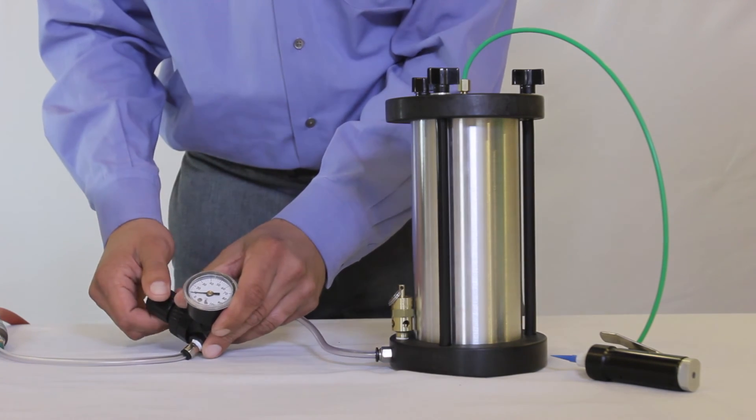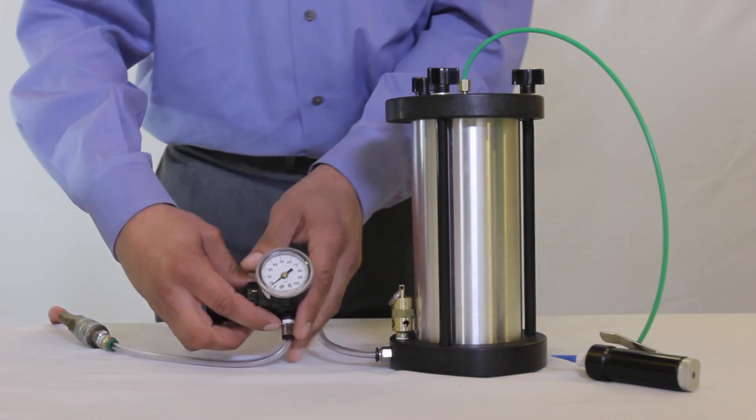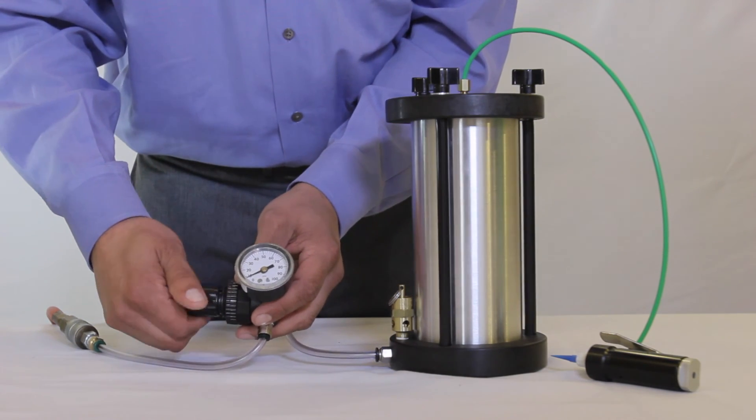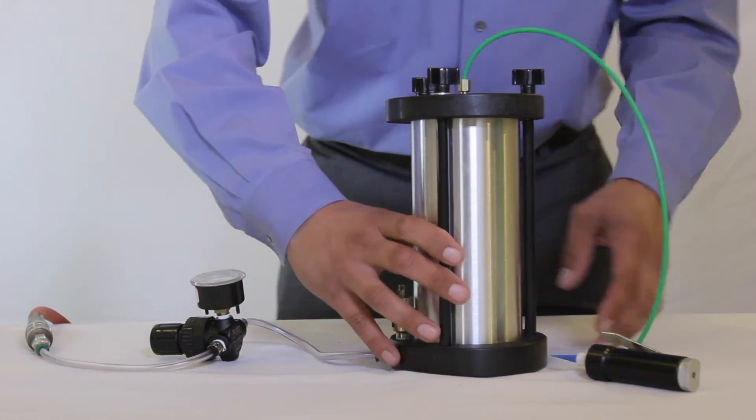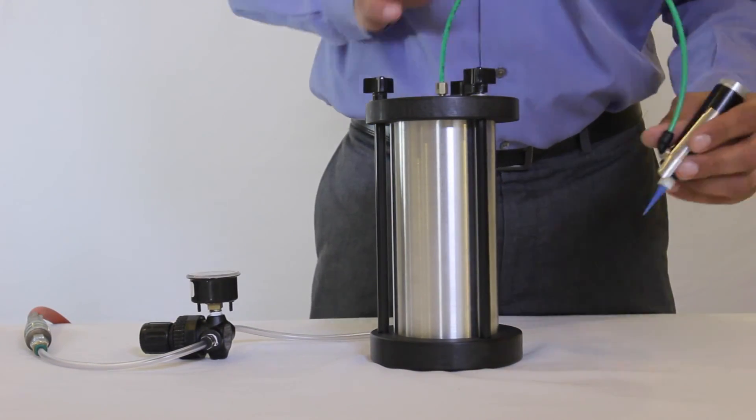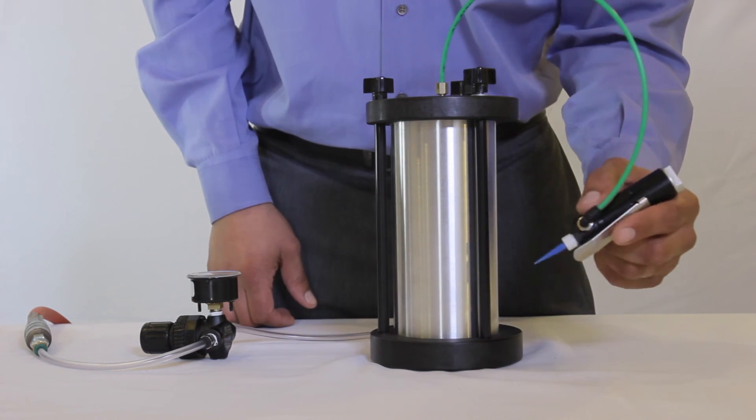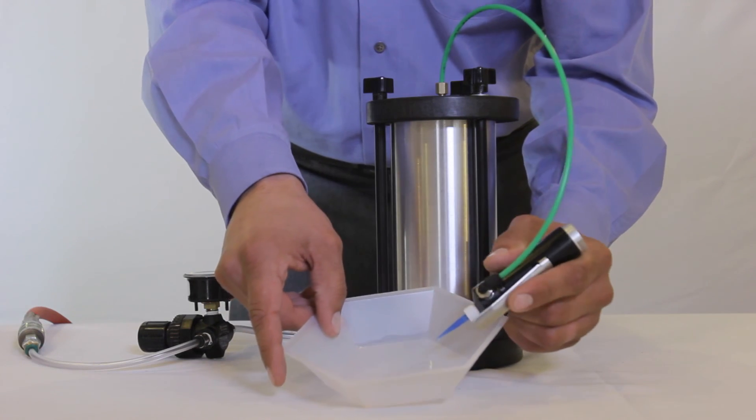Adjust the regulator to a minimum pressure of 10 psi to begin pressurization. Once pressurized, the material will take a few seconds to travel to the valve and enable the operator to test the flow of material. Increasing or decreasing the regulator will allow the operator to control the flow of material. You are now ready to start dispensing.